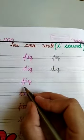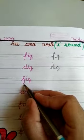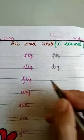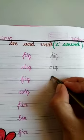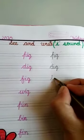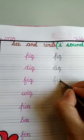Now, read the next word. This is fa, ig — fig. Fa, ig, fig.